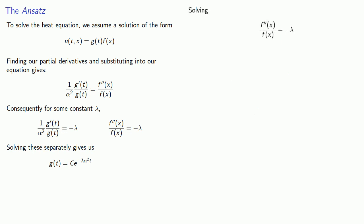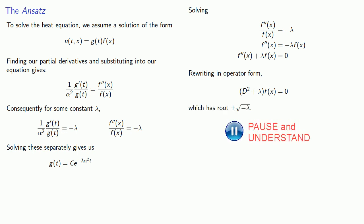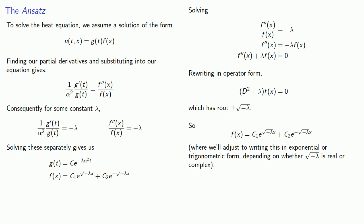Similarly, our second differential equation can be rewritten, rewriting in operator form, which gives us roots of plus or minus square root of minus lambda. So our solutions will be, and we end up with our function looking like this, where we'll adjust to writing this in exponential or trigonometric form, depending on whether square root minus lambda is real or complex.